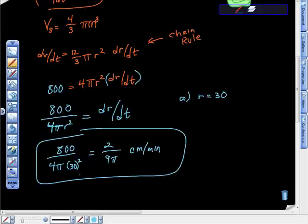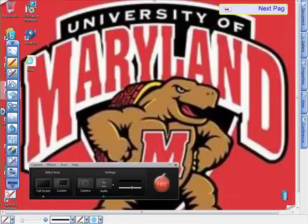If we wanted to figure out what it was, this is for 30. At radius equals 30, here.